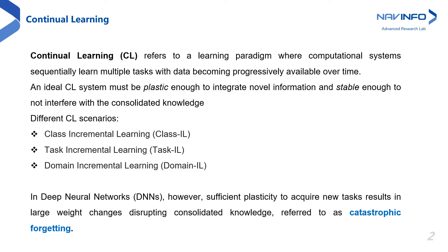Training sequentially on multiple datasets violates the IID assumption. Therefore, the learning objective for the current task enforces large weight changes, leading to catastrophic forgetting of older tasks and overfitting on the current task. Catastrophic forgetting leads to a drop in performance, and in the worst case, the older task is completely forgotten.